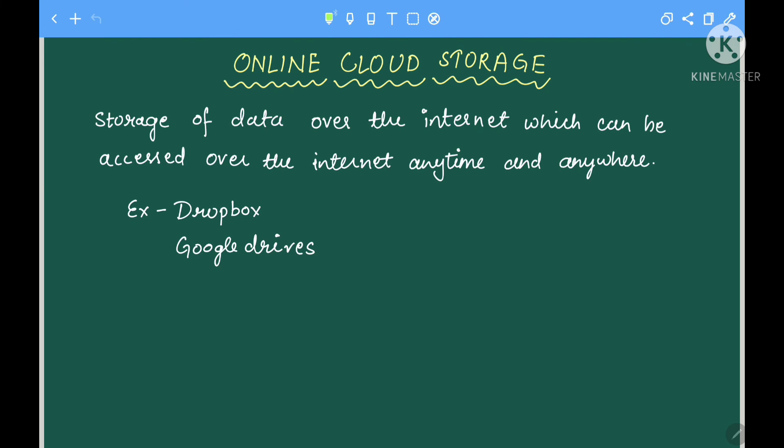Now there is another kind of storage area we call online cloud storage. These are storage of data over the internet, which can be accessed anytime and anywhere. Examples include Dropbox and Google Drives, which store data over the internet.